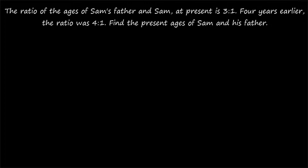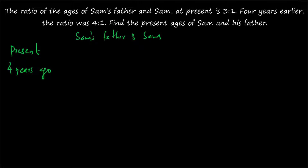Question number 2: the ratio of the ages of Sam's father and Sam at present is 3 is to 1. Four years earlier, the ratio was 4 is to 1. Find the present ages of Sam and his father. Here also the relation between Sam's father and Sam is given at present and 4 years earlier. Using the shortcut, first write present and then 4 years ago. Remember: always write the present as the first row value, then the past. Sam's father is to Sam: at present, the ratio is 3 is to 1, and 4 years earlier, it was 4 is to 1.